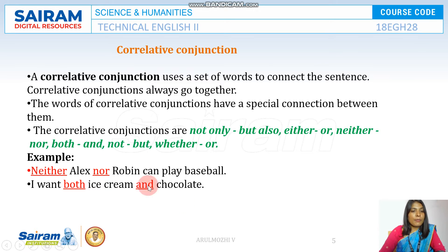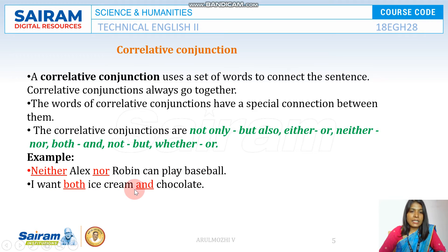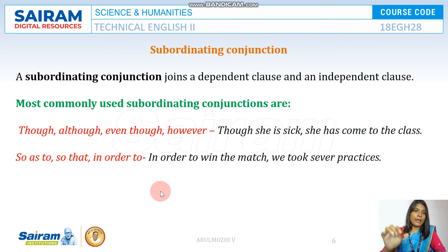Here are some examples of co-relative conjunctions: "Neither Alex nor Robin can play baseball." "I want both ice cream and chocolate."